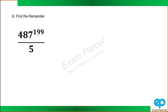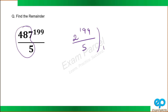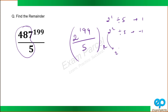Now let's move on to the next question: 487 raised power 199 divided by 5. First I will reduce the base: 487 divided by 5 gives a remainder of 2. So we need the remainder of 2 raised power 199 divided by 5. Again, 2 raised power 1 divided by 5 gives remainder 2. 2 raised power 2 divided by 5 gives remainder 4, which is minus 1.